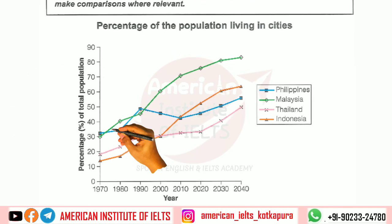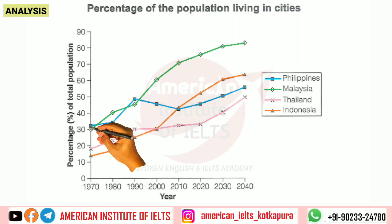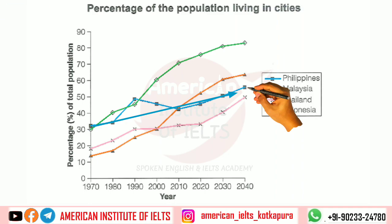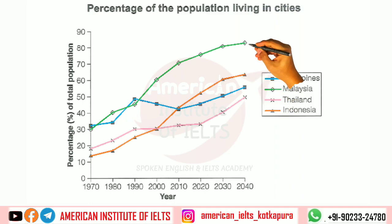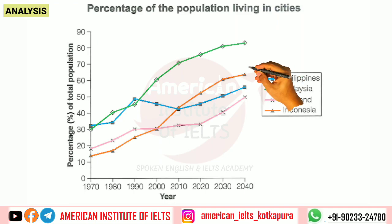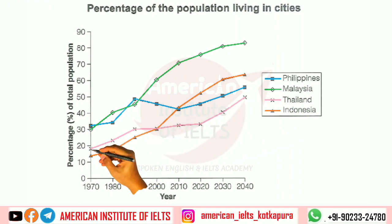Now let's have a deeper look for analysis. First, if we talk about Philippines, which is denoted by the blue line — Philippines was indeed the most ahead in 1970, but by 2040 it will fall to third place. So urbanization did not spread as fast there. Then for Malaysia — Malaysia is leading the race because it overtook Philippines after 1990, and by 2040 approximately 80 percent — or in other words, four-fifths — of its population will be living in cities.